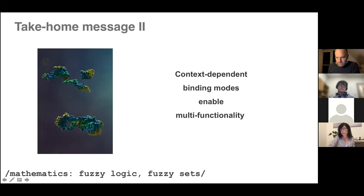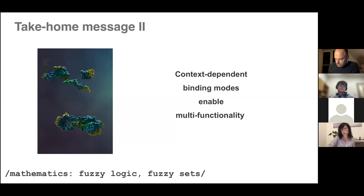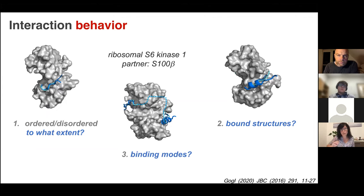In mathematics, the formalism for context-dependence is called fuzzy set theory—it's a recognized field in mathematics. Considering this context-dependent behavior, how would we describe an interaction between two proteins? Mostly we ask: is it an ordered or disordered complex? But I hope you understood from my message that you don't just ask about an interaction—you ask about an interaction behavior. This has three components; one is whether it's ordered or disordered, and to what extent.